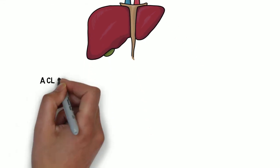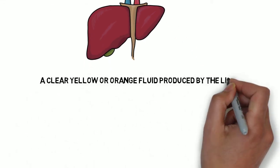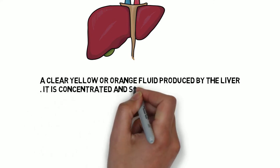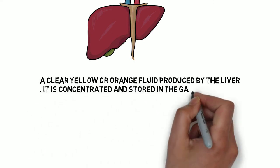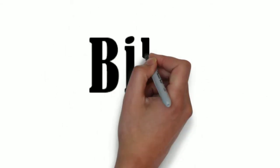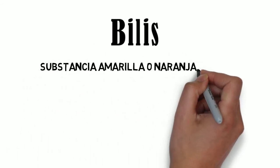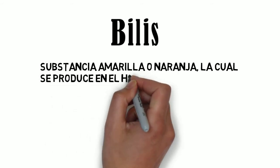Fourth word: bile — a clear yellow or orange fluid produced by the liver. It is concentrated and stored in the gallbladder. En español, bilis: sustancia amarilla o naranja, la cual se produce en el hígado, se concentra y se retiene en la vesícula.